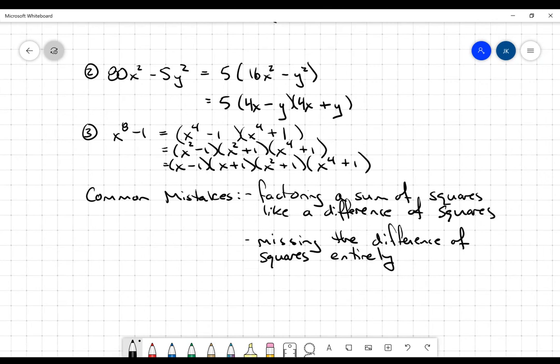A common mistake is, first of all, factoring a sum of squares like it's a difference of squares. You've got to watch out for that. It should be a subtraction in between those two terms. And then another thing is missing the fact that a difference of squares exists in the problem entirely.